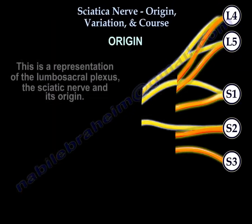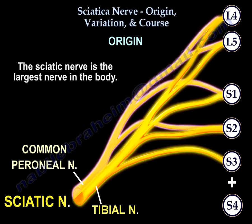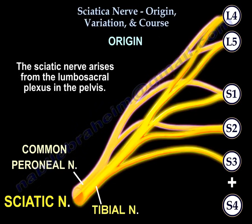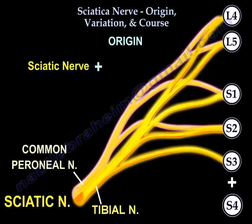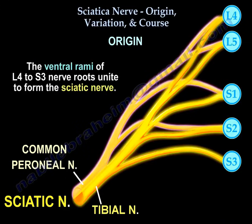Origin. Here is a picture of the lumbosacral plexus, and you can see the origin of the sciatic nerve. The sciatic nerve is the largest nerve in the body. It arises from the lumbosacral plexus in the pelvis, and the ventral rami of L4 to S3 nerve roots unite to form the sciatic nerve.